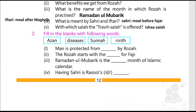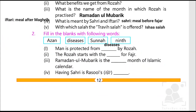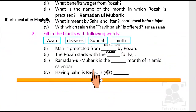Fill in the blanks with the following words: Azan, diseases, Sunnah, and ninth. Man is protected from diseases by Roza. The Roza starts with the Azan for Fajr. Ramadan-ul-Mubarak is the ninth month of the Islamic calendar. Having Sahari is the Rasool's Sunnah.